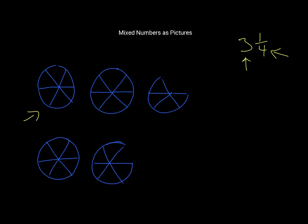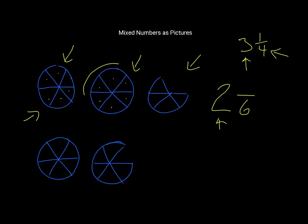This picture can be represented by writing the mixed number 2 as the whole number, because we have two whole circles — there's 1 and there's 2, with no pieces missing. So we write the 2. Then for the fraction, the denominator is going to be 6, because each complete circle has 6 pieces. This partial one has 1, 2, 3, 4 pieces, so the numerator is going to be 4 and the denominator is 6.